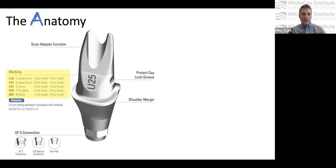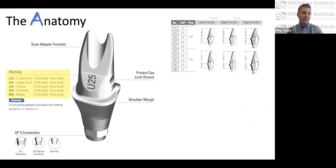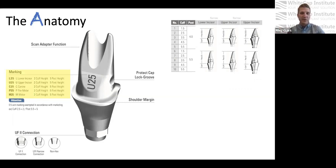Looking at the different geometries here — the cuff height options and post height options. Basically the post height is a four or five. The cuff height goes anywhere from 1.5 to 5.5. When the first number is two, it's actually a 2.5 — they just condense the labeling. These charts are important, but the reality is you're probably sending a case to the lab and they are the ones worrying about these different numbers. You don't have to memorize them all — we're just going to send you the right one — but it's important to understand your options.